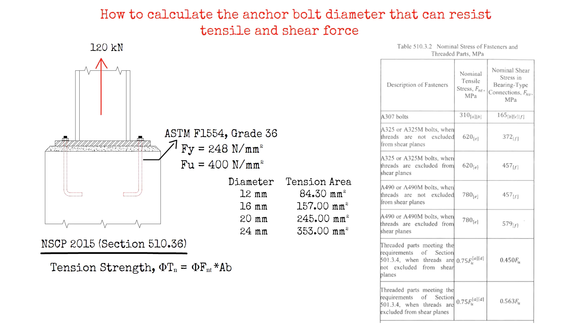Where the value of reduction factor φ is 0.75. Now, since we will be using ASTM F1554 anchor bolts, the table suggests to use 0.75 times the ultimate strength FU as the nominal tensile stress FNT, if the threaded parts meet the requirements of section 510.3.4 and threads are not excluded from the shear planes.